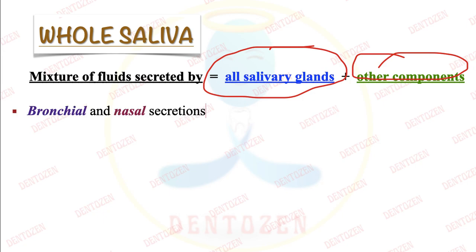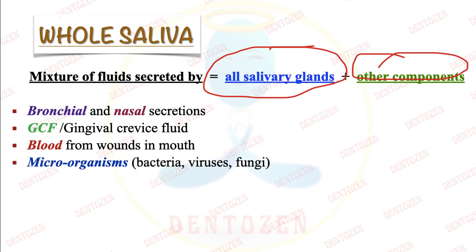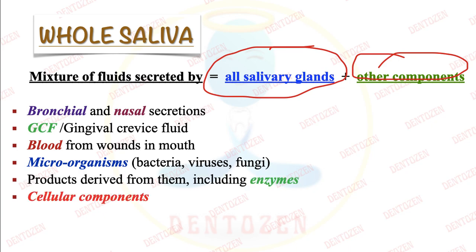These other components include bronchial or nasal secretions, gingival crevicular fluid which comes from the gingival sulcus, blood if there are wounds, microorganisms like bacteria, viruses, fungi, their metabolic products, enzymes, cellular components shed from oral mucosa cells, and food debris remnants. All these are mixed with salivary gland secretions to make whole saliva.